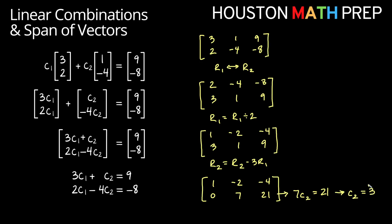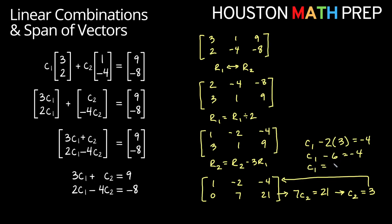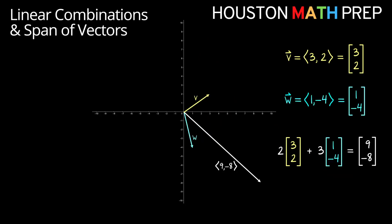Taking that c2 value of 3 and using it in the first row — c1 minus 2 times c2 equals negative 4 — we get c1 minus 6 equals negative 4, so c1 equals 2. We get a solution of c1 equals 2 and c2 equals 3, meaning 2 times vector v plus 3 times vector w gives us 9 negative 8. We can show this visually by putting two copies of v end to end, then continuing with three copies of w, and we arrive at the same endpoint as the vector 9 negative 8.